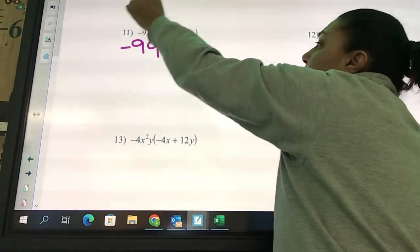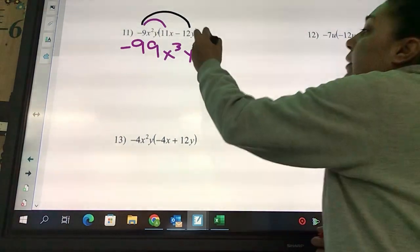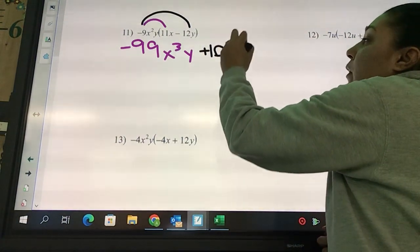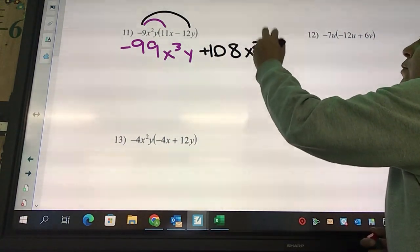Negative nine times negative 12 is positive 108. What's my letters looking like? x²y².